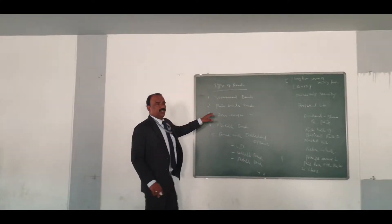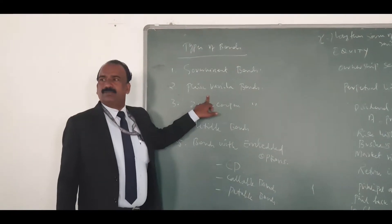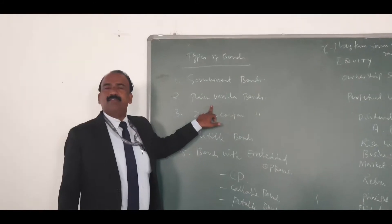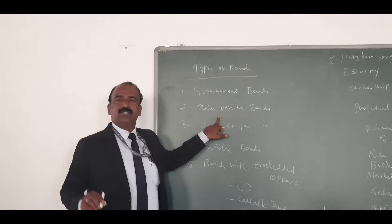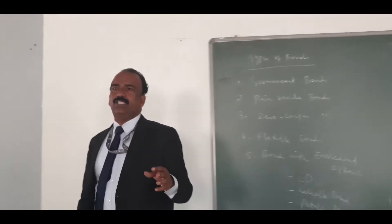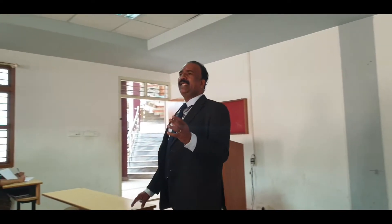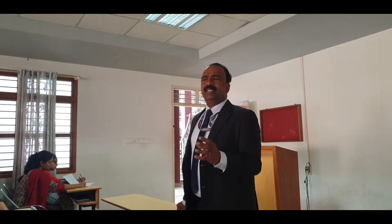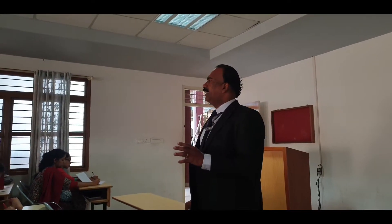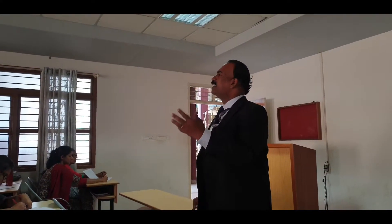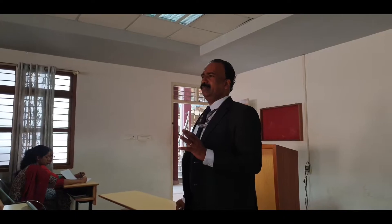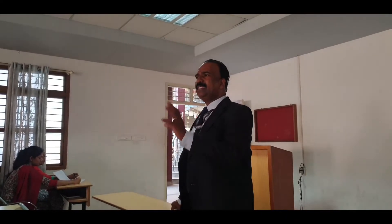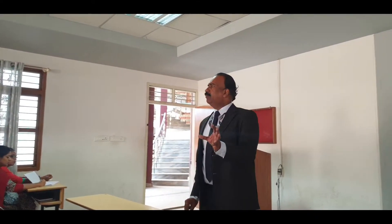Straight bonds, also called plain vanilla bonds, are bonds which carry a fixed maturity period, fixed coupon rate of interest, and principal repayment. So there is a fixed rate of interest and a fixed maturity period.